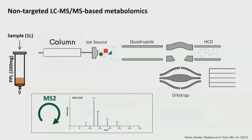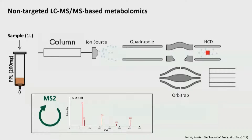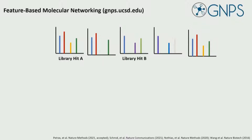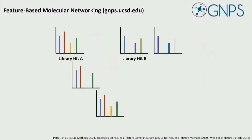For those of you who do not know what molecular networking is: what we basically use this for is to map out the chemical space. We take all experimental MS/MS spectra, compare them to each other, and organize them in a molecular network.